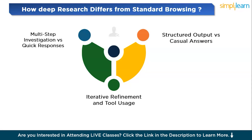Deep Research utilizes an iterative process where it can refine its findings by revisiting information as it proceeds with the research. This iterative approach allows it to build a more accurate and reliable output over time. In comparison, ChatGPT browsing does not refine its answers in the same manner — once the browsing tool fetches a response, that is typically the final answer provided. It lacks ongoing adjustment of information based on further exploration, making it less adaptable in handling complex or multi-layered queries.